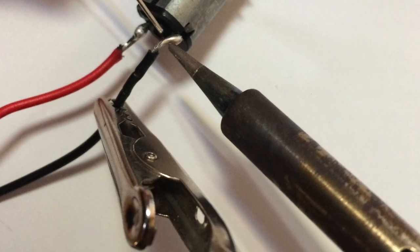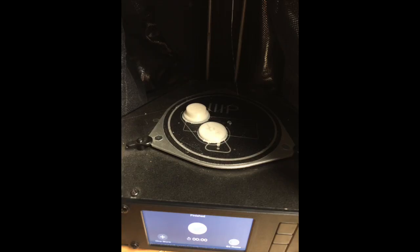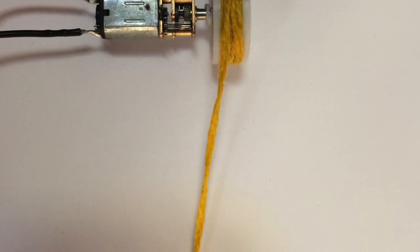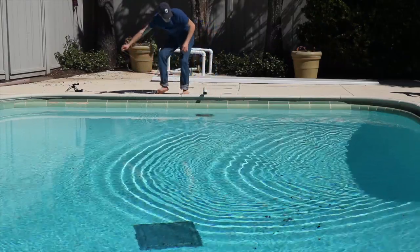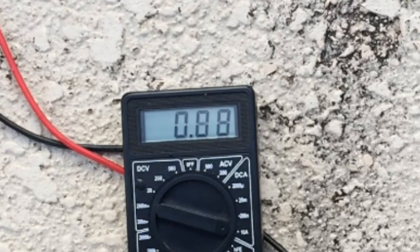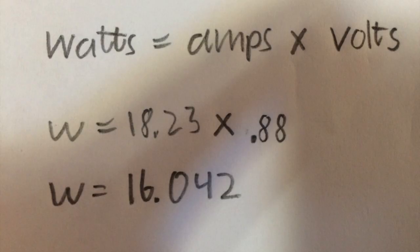Next, we put together a small generator using a motor and printed out spools in order to test how much electricity the kite could produce. Moving at an average speed of 0.97 knots, the kite generated 18.48 volts and 0.88 amps. Using these values, we calculated that overall, the kite produced 16.262 watts.